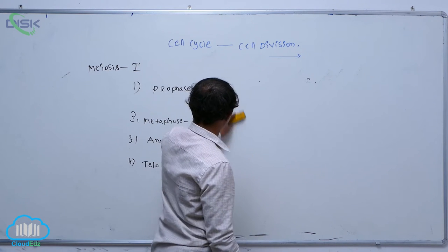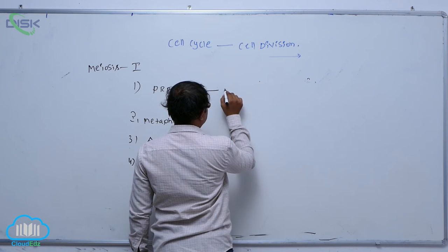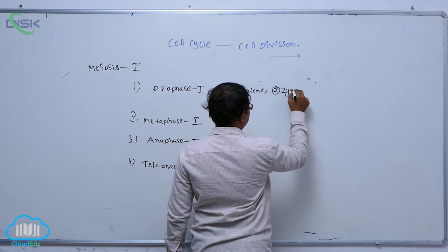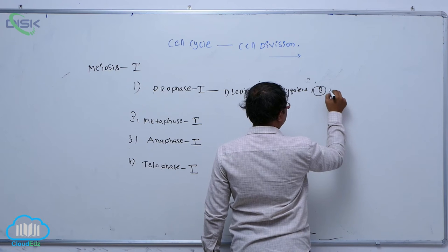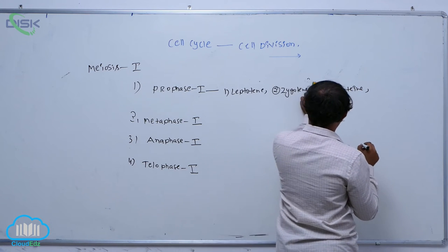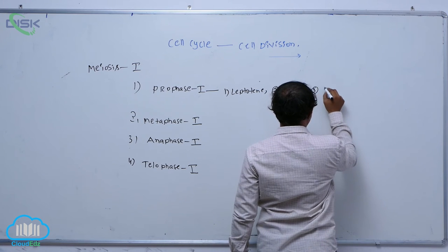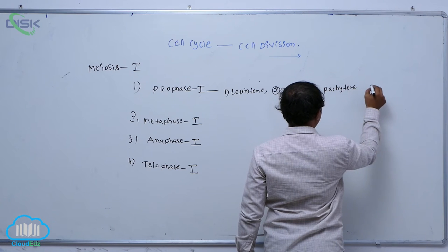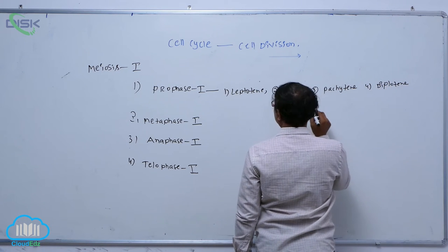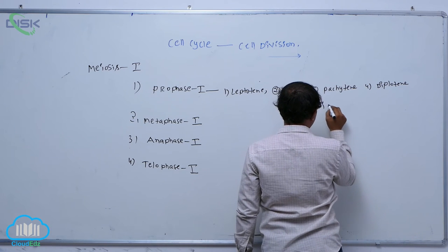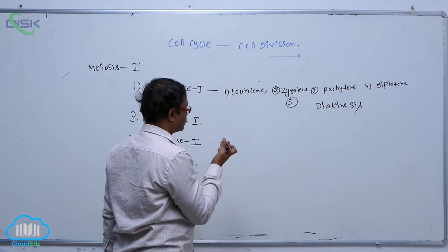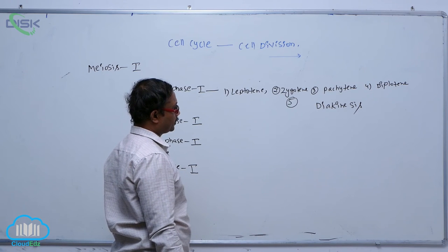Generally, prophase one is divided into five sub-stages: Leptotene, Zygotene, Pachytene, Diplotene, and the fifth one is Diakinesis. So prophase one has leptotene, zygotene, pachytene, diplotene, and diakinesis.